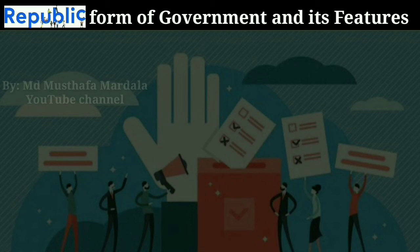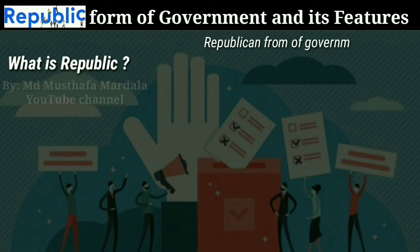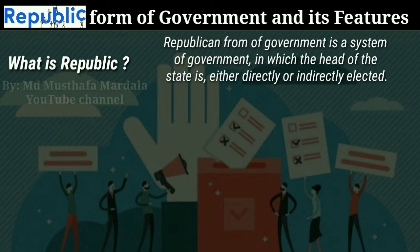The first question is: what is a republican form of government? A republican form of government is a form of government in which the president or the head of state must be elected — it might be a direct or indirect election — but he must be elected. In a republican form of government, the country or state is considered as public property or public matter, and not as the private property of any ruler. Around 160 independent nations use 'republic' as their official name.